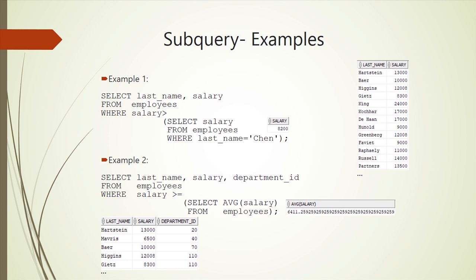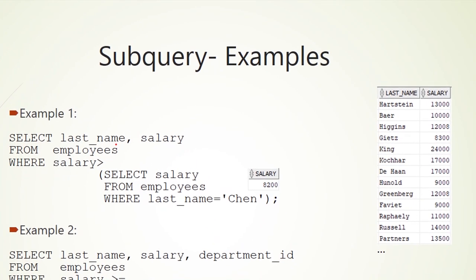SELECT last_name, salary FROM employees WHERE salary > (SELECT salary FROM employees WHERE last_name = 'Chin'). Here we have a subquery and an outer query. The subquery runs first and returns the salary of the employee called Chin — for example, 8200.